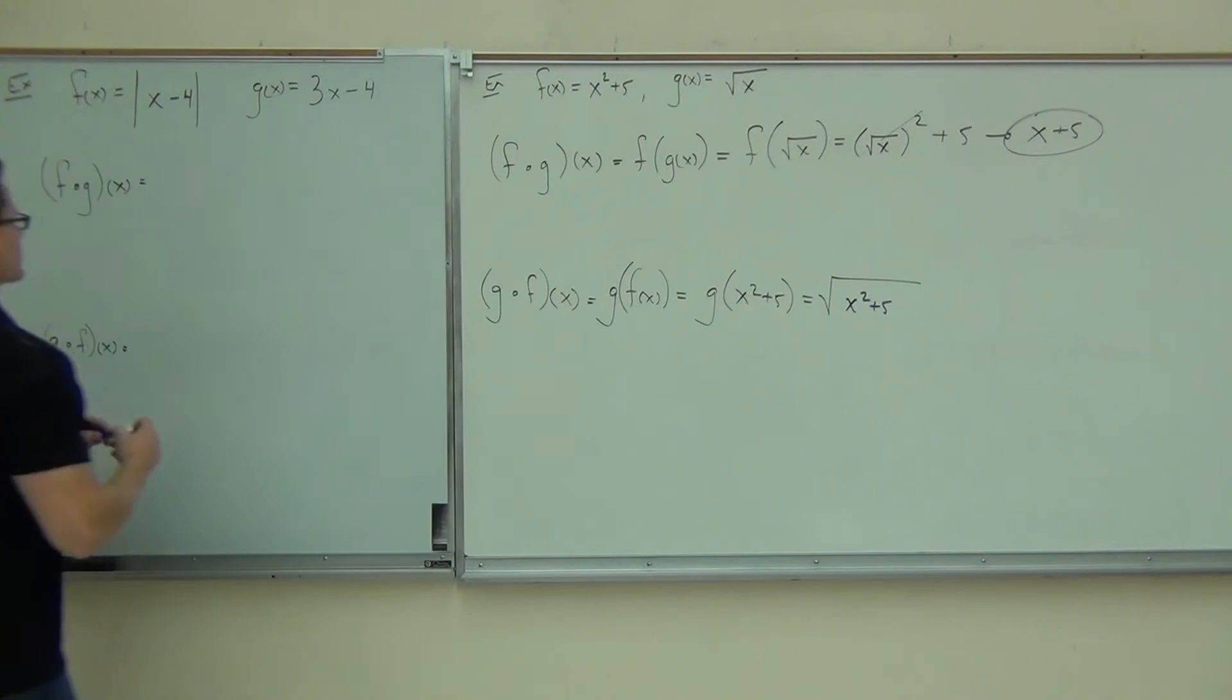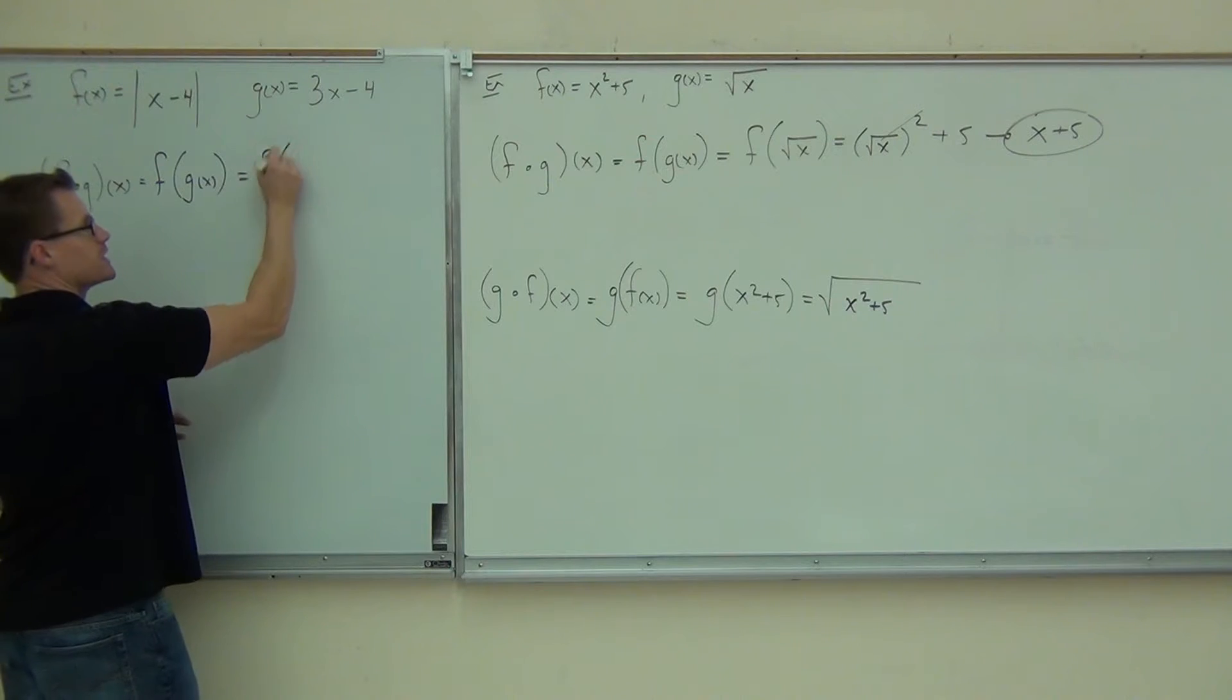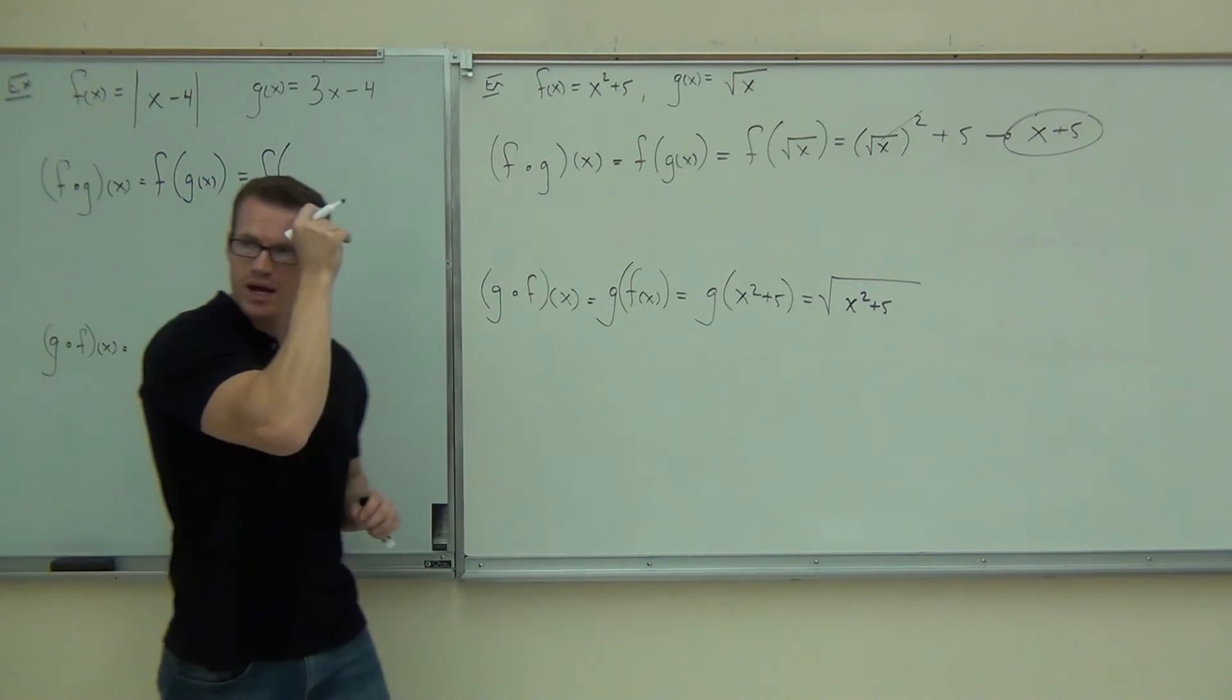F of g of x, g of f of x. So here we go. F of g of x, written the same exact way, it's said the same exact way. F of, can you please tell me what's going to go inside of my parentheses?